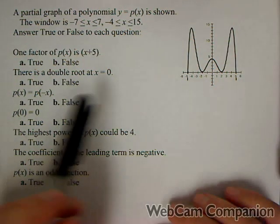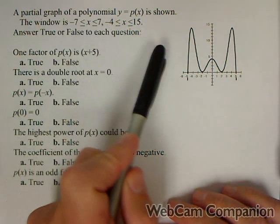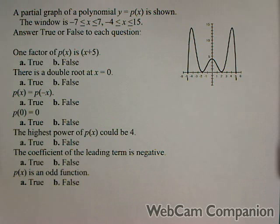In this video, we have a graph of a polynomial shown from negative seven to seven and negative four to fifteen, and we want to answer true or false to each question.